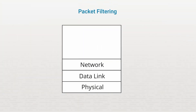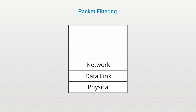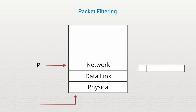First, let's talk about packet filtering firewalls. A packet filtering firewall examines the information within each packet header. It operates at layer 3, the network layer of the OSI model. When a frame enters a packet filtering firewall, the firewall removes the framing information to expose the IP packet contents within that frame. The packet information includes the data, the destination IP address, the source IP address, as well as the source port and destination port. With a packet filtering firewall, you can define ACLs based on that information — including source IP address, destination IP address, source port number, and destination port number.